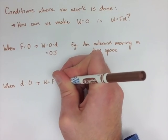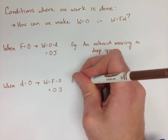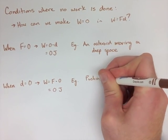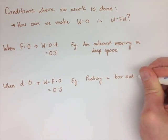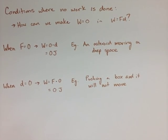The second is when the displacement is 0. We have force times 0, that's going to be 0 again. It's something like if you're pushing on an object and the object won't move—well, we're going to have work being done of 0 joules.